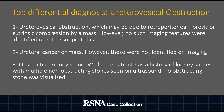The differential diagnosis includes: number one, ureteral extrinsic obstruction, which may be due to etiologies including retroperitoneal fibrosis or extrinsic compression by a mass; however, no such imaging features were identified on CT. The differential diagnosis also includes ureteral cancer or mass, but these were not identified on imaging. Finally, the differential diagnosis includes nephrolithiasis. While the patient has a history of kidney stones with multiple non-obstructing stones seen on ultrasound, no obstructing stone was visualized, and furthermore, this diagnosis alone is incomplete.